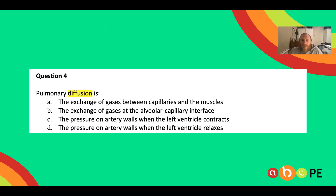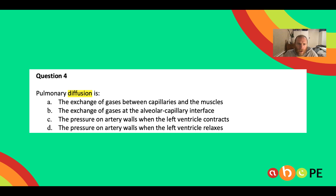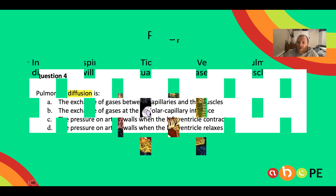Here's a multiple choice question to help with this. Pulmonary diffusion is B — the exchange of gases at the alveoli. Option C — the exchange of gases between the capillary and the muscles — is diffusion, but it's not pulmonary diffusion, so it's not part of the acute respiratory responses.